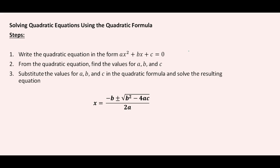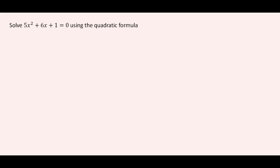Now we're going to examine the steps. The first thing you want to do is write the quadratic equation in the form AX squared plus BX plus C equal to zero, and then compare against the standard quadratic equation. Then you can get the values for A, B, and C, and plug those values into the quadratic formula — some call it the magic formula. Then we solve.